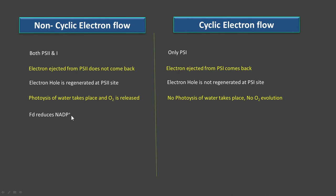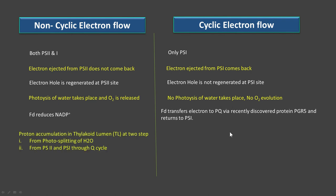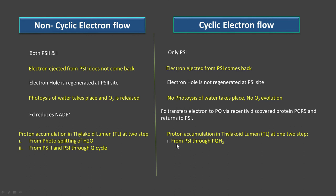In non-cyclic flow, ferredoxin reduces NADP⁺ to NADPH. In cyclic flow, ferredoxin transfers electrons to plastoquinone via the recently discovered PGR5 protein — proton gradient regulation protein — and electrons return to PS1. For proton accumulation in the thylakoid lumen: in non-cyclic flow there are two sources — photo splitting of water and through the Q cycle via PQH2. In cyclic electron flow, proton accumulation takes place only through PQH2, since PS2 is not working.